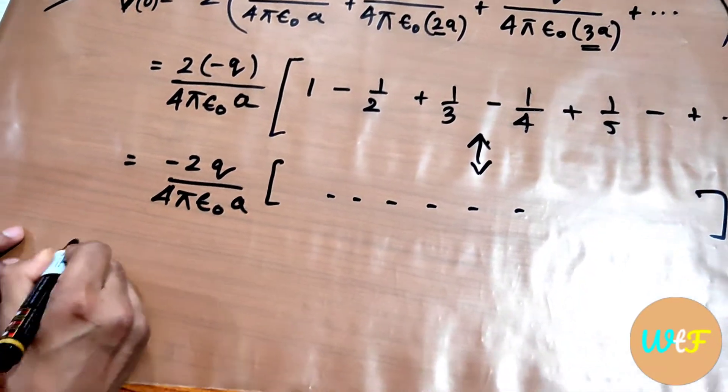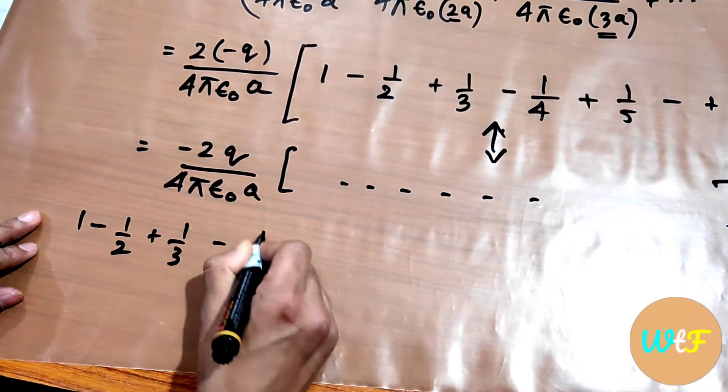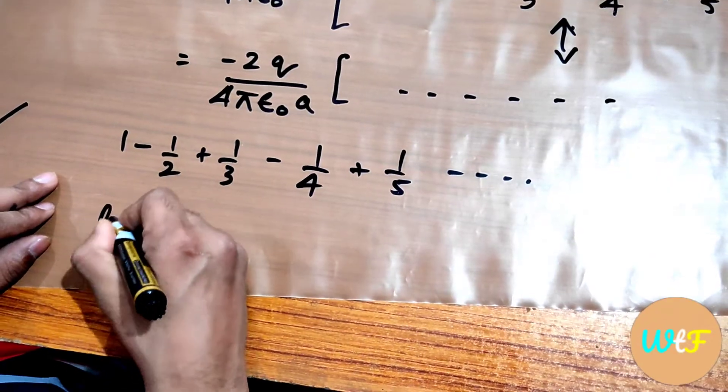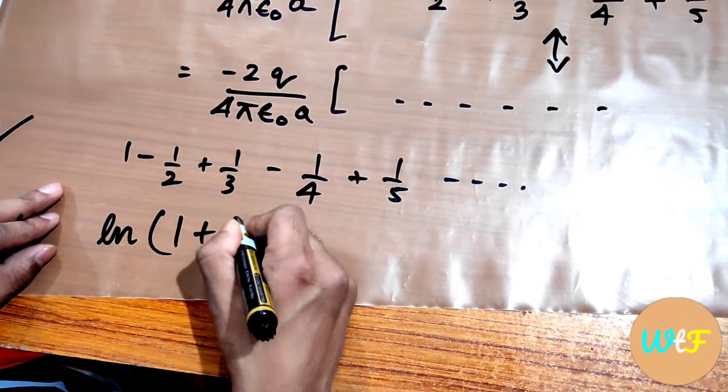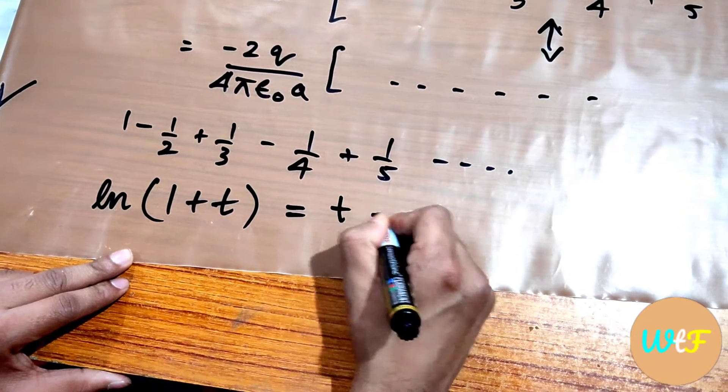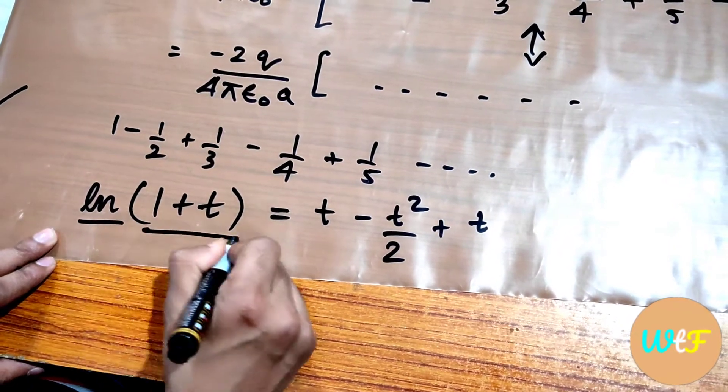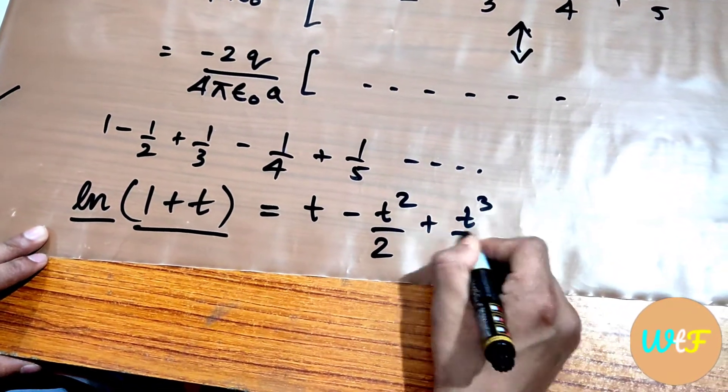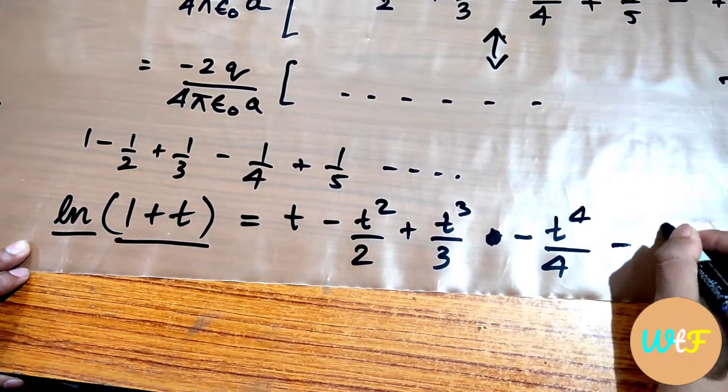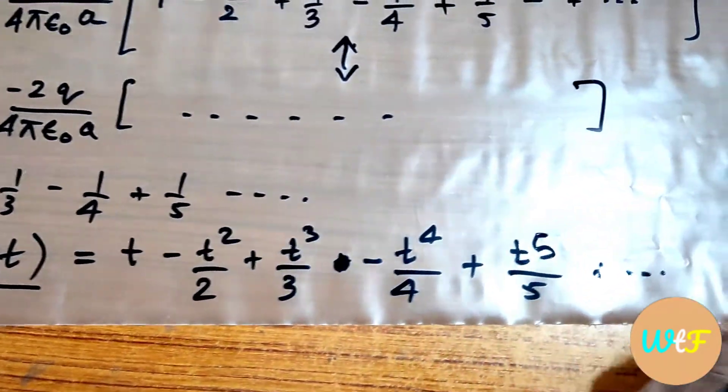Let's take a look at the series. This is 1 minus 1 by 2 plus 1 by 3 minus 1 by 4 plus 1 by 5 and so on. Now if you know about this expansion, you should be familiar with this expansion, it's a pretty famous expansion for natural log of 1 plus t, and that is this: t minus t² by 2 plus t³ by 3 minus t⁴ by 4 plus t⁵ by 5 and so on.